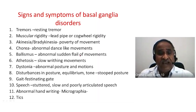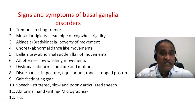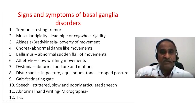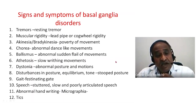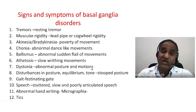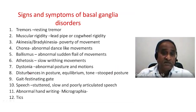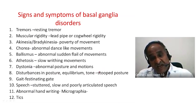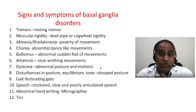Fifth is ballismus — sudden flailing of the limbs. Sixth is athetosis — slow writhing movements. Seventh is dystonia — sudden contraction of a particular group of muscles, resulting in abnormal posture and motion, even leading to falling. Eighth is disturbance of posture, equilibrium, and tone — seen as a stooped posture, especially the parkinsonian universal flexion posture.